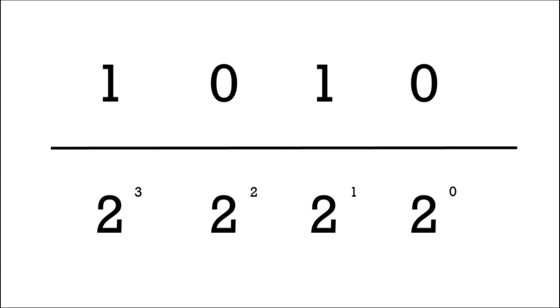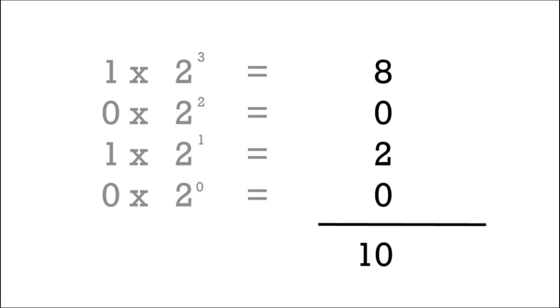So 0 times 2 to the power of 0, 1 times 2 to the power of 1, 0 times 2 to the power of 2, and 1 times 2 to the power of 3. So if we add them all up like we did with previous examples, we can see that we get the number 10 because 1 times 2 to the power of 3 is 8. 0 times anything is always going to be 0. 1 times 2 to the power of 1 is 2. We add that all up and we get 10.